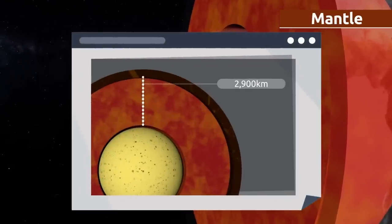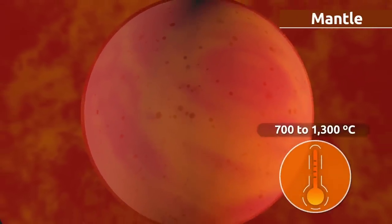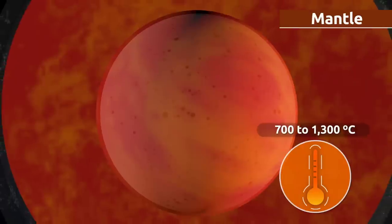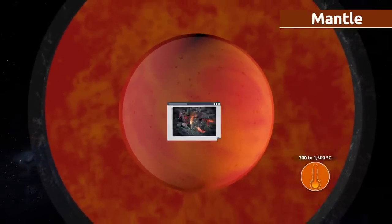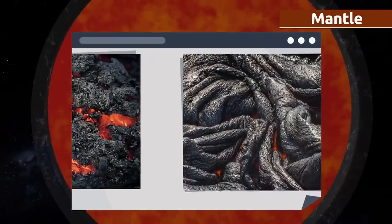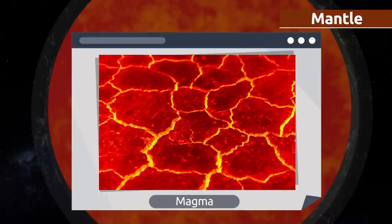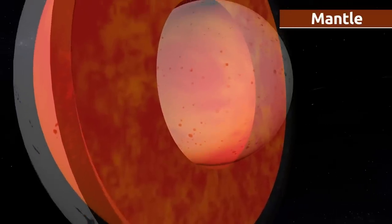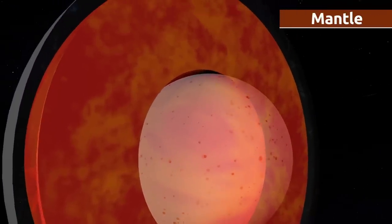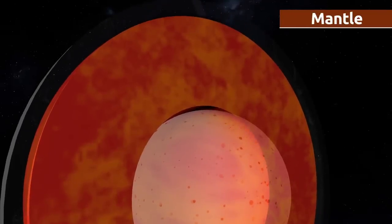The second layer of the geosphere is called the mantle. It represents 82 percent of the earth's volume and is 2,900 kilometers thick. The temperature of the mantle is very high, ranging from 700 to 1,300 degrees Celsius — that's why it is made up of molten rock called magma. Sometimes magma finds its way up to the surface and flows through the void between tectonic plates.